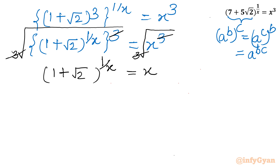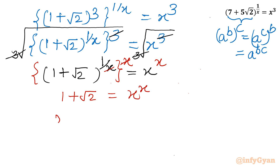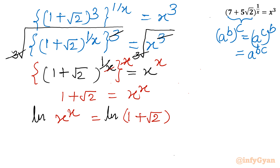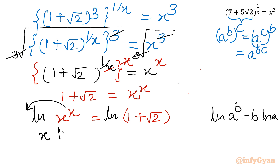Now I will raise both sides to the power x. The exponents x and 1/x cancel on the left, giving: (1 + √2) = x^x. Rewriting: x^x = 1 + √2. Now I will take the natural log of both sides. Using the log property ln(A^b) = b·ln(A), the x comes as a multiplier: x·ln(x) = ln(1 + √2).